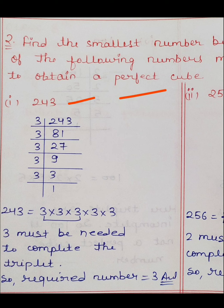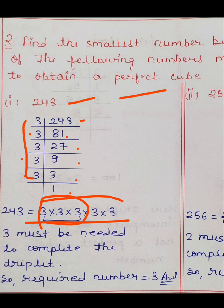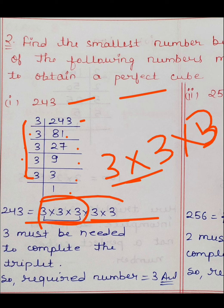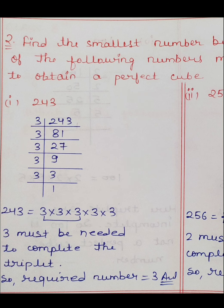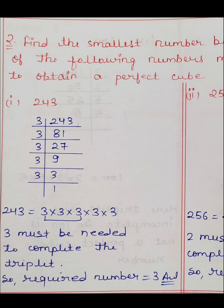First is 243। 243÷3=81, 81÷3=27, 27÷3=9, 9÷3=3, 3÷3=1। Prime factor 3 आया 5 times। पहला triplet complete हो गया। Second triplet में 2 बार 3 है — एक बार और 3 से multiply करने पर triplet complete हो जाएगा। 3 must be needed to complete the triplet, so required number is 3।